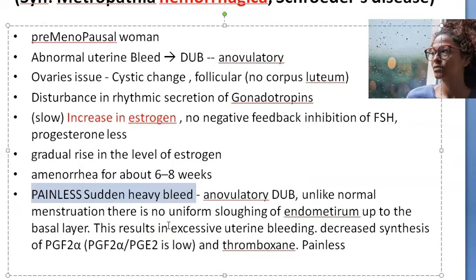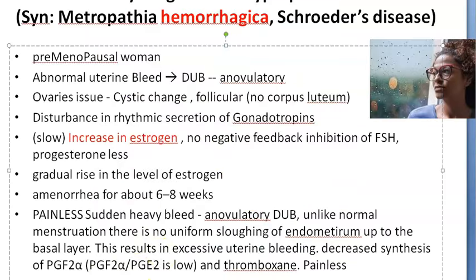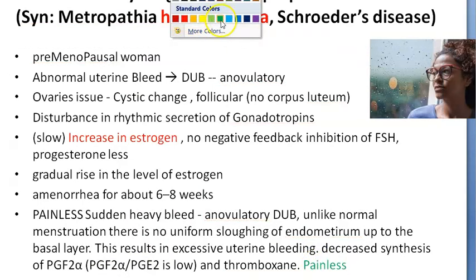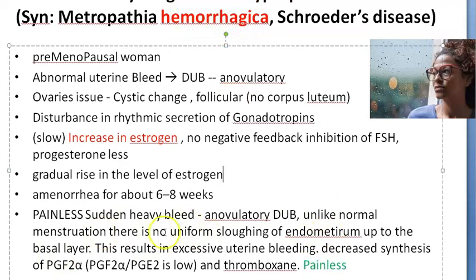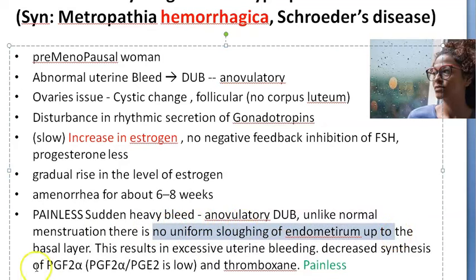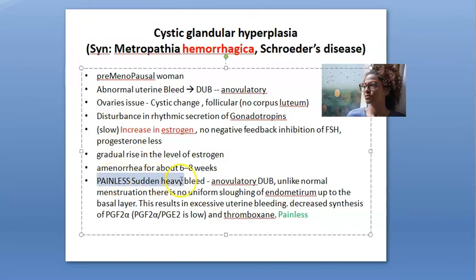Then all of a sudden there is heavy painless bleeding — this is Metropathia Hemorrhagica. It is anovulatory DUB, so it is painless because there are no prostaglandins, and no prostaglandins means no pain. In normal menstruation the endometrium is sloughed off uniformly up to the basal layer, but here there is no uniform slough-off of the endometrium to the basal layer. She bleeds, but it is not uniform.